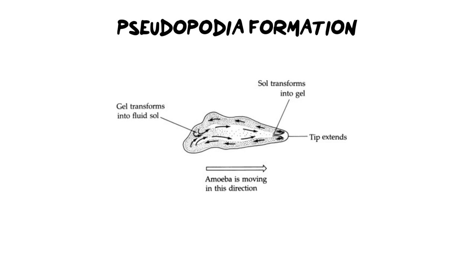Looking into pseudopodia formation, we need to break down the word: pseudo means false and podia means feet, so we are creating false feet. Protists use this to move around but they also use it to engulf their food. It's really important to understand the basic internal cytoplasm structure of a protist to understand this process. We've got effectively two consistencies of cytoplasm: the outside layer is a thicker gel, and the inner layer is a liquidy, watery substance.